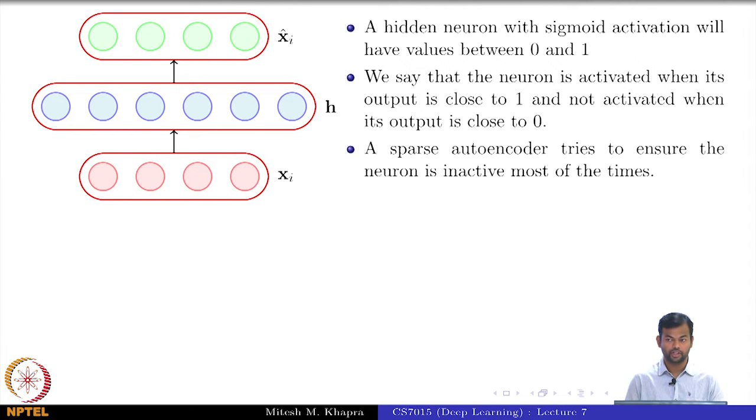What does that mean? It is close to 0 for most of the inputs. So passing a lot of inputs to it, it will try to ensure that it is close to 0 for most of the inputs. In other words, what is it trying to ensure? The average activation of a neuron is close to 0.